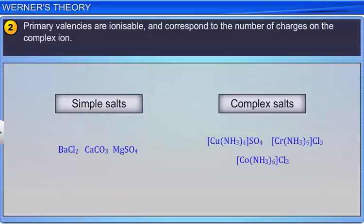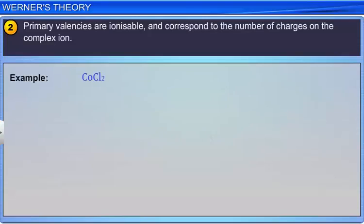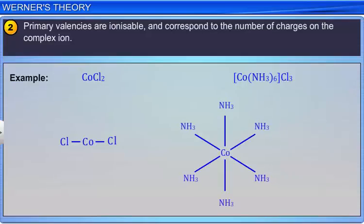For example, the primary valency of 2 in CoCl2 is satisfied by 2 chloride ions. Similarly, the primary valency of 3 in the complex Co(NH3)6Cl3 is satisfied by 3 chloride ions. In modern terminology, the primary valency corresponds to the oxidation number.